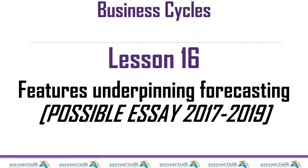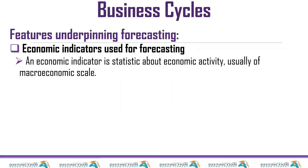Let's move on to features underpinning forecasting. We are introducing unit four, which is the last unit of business cycles. This topic is a possible essay-type question for 2017 to 2019, extended to 2020, and as of 2021 we don't know whether new exam guidelines will be issued. If extended to 2021, it remains an essay-type question. Either way, let's get into the economic indicators used for forecasting.